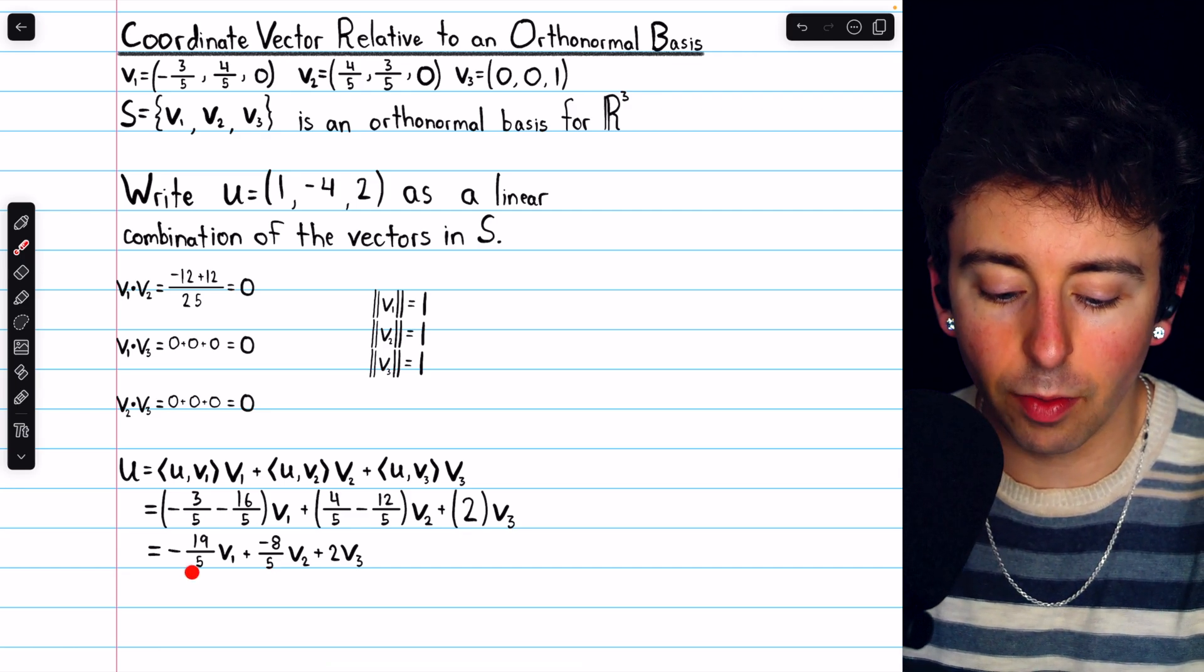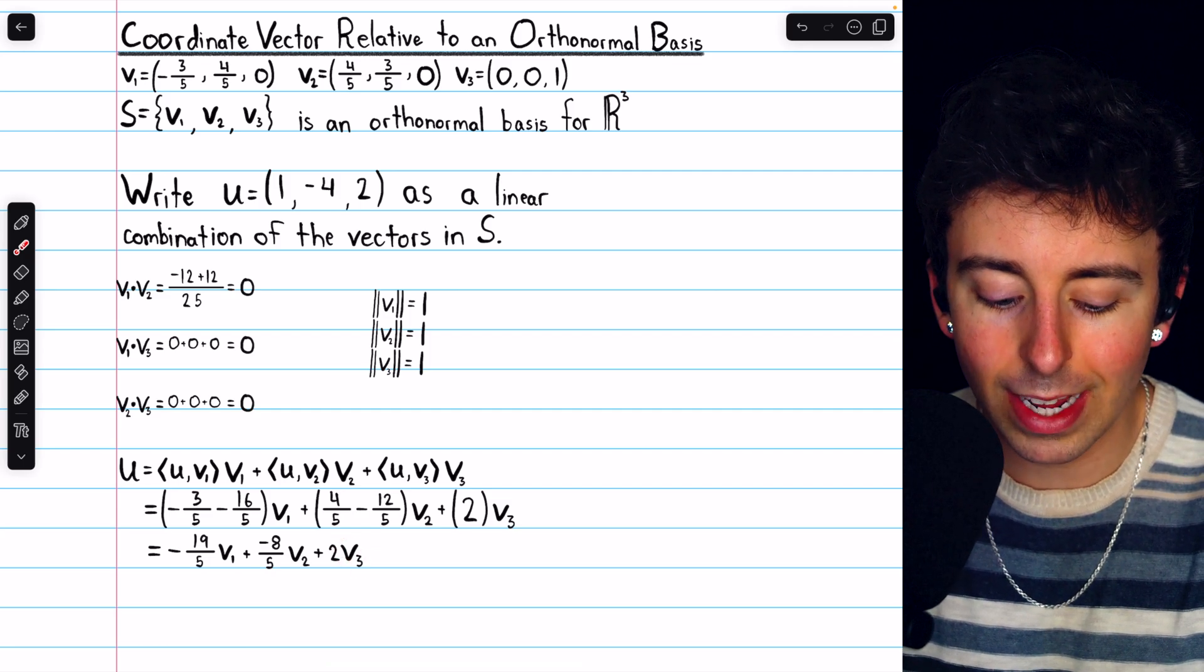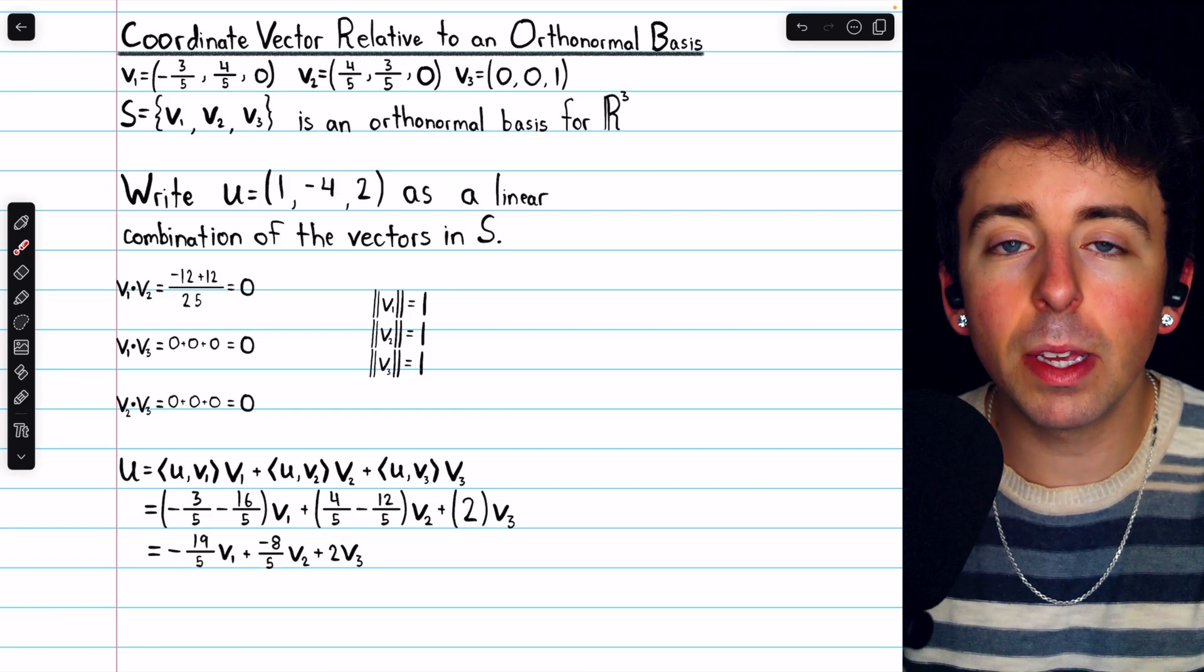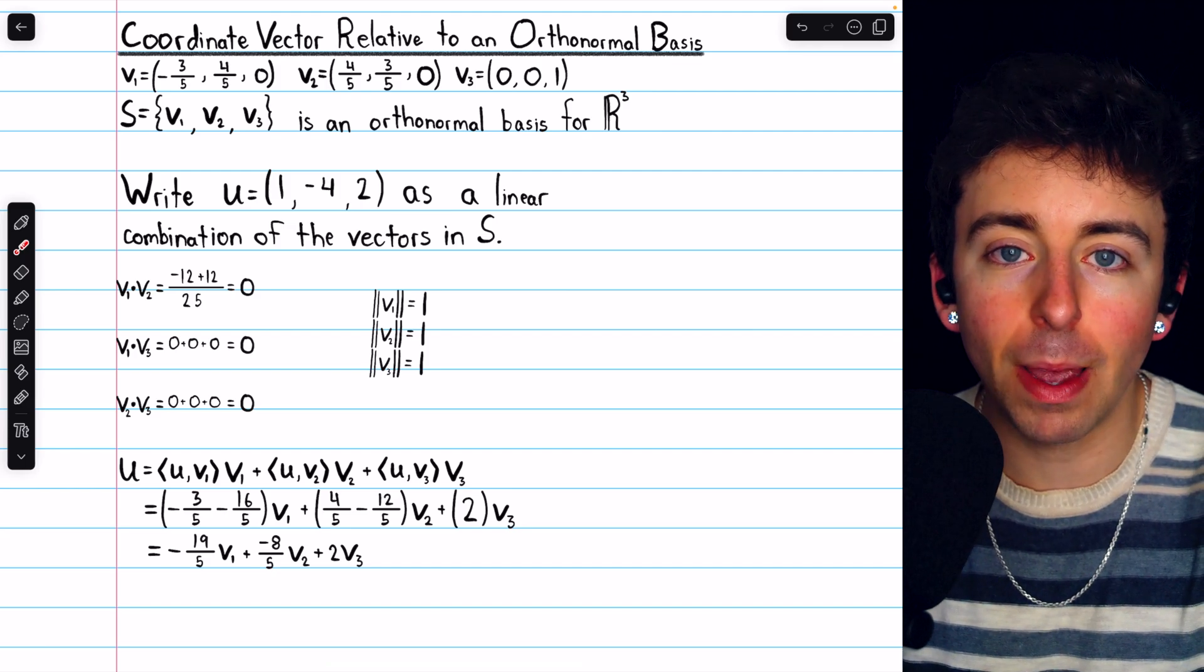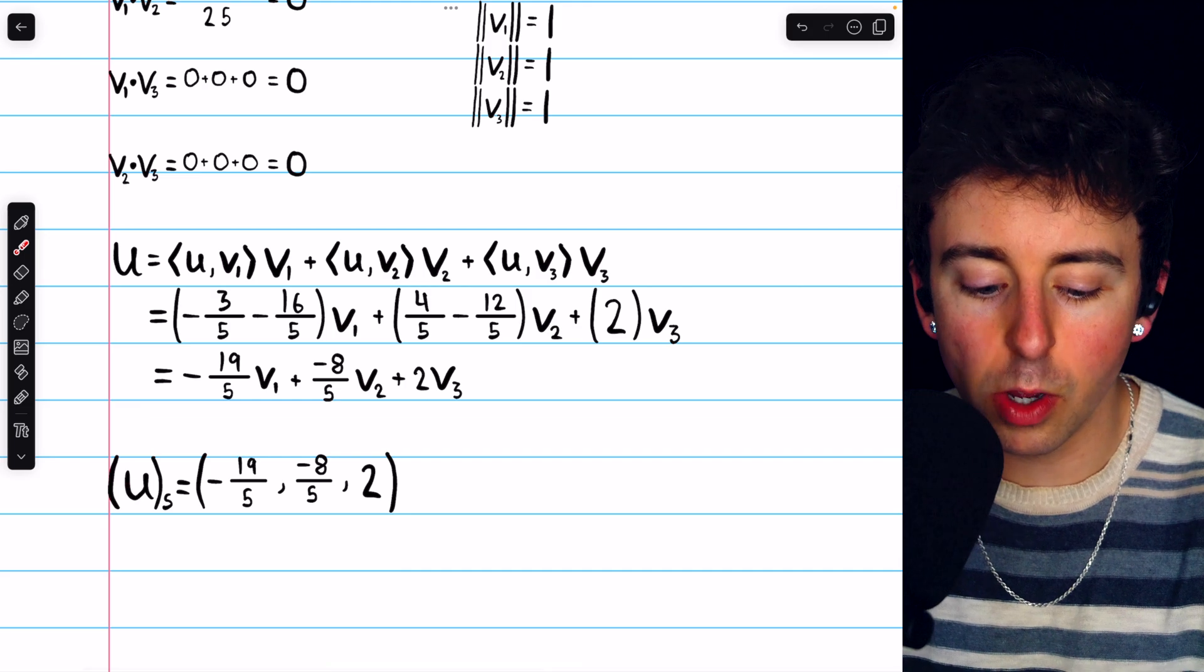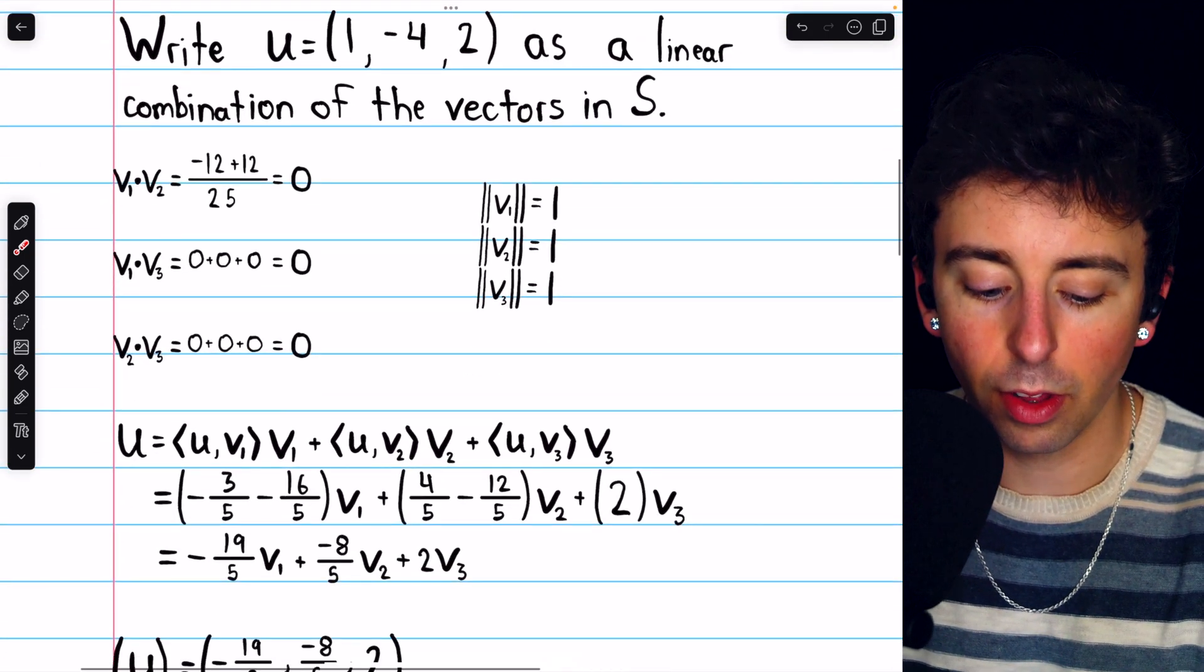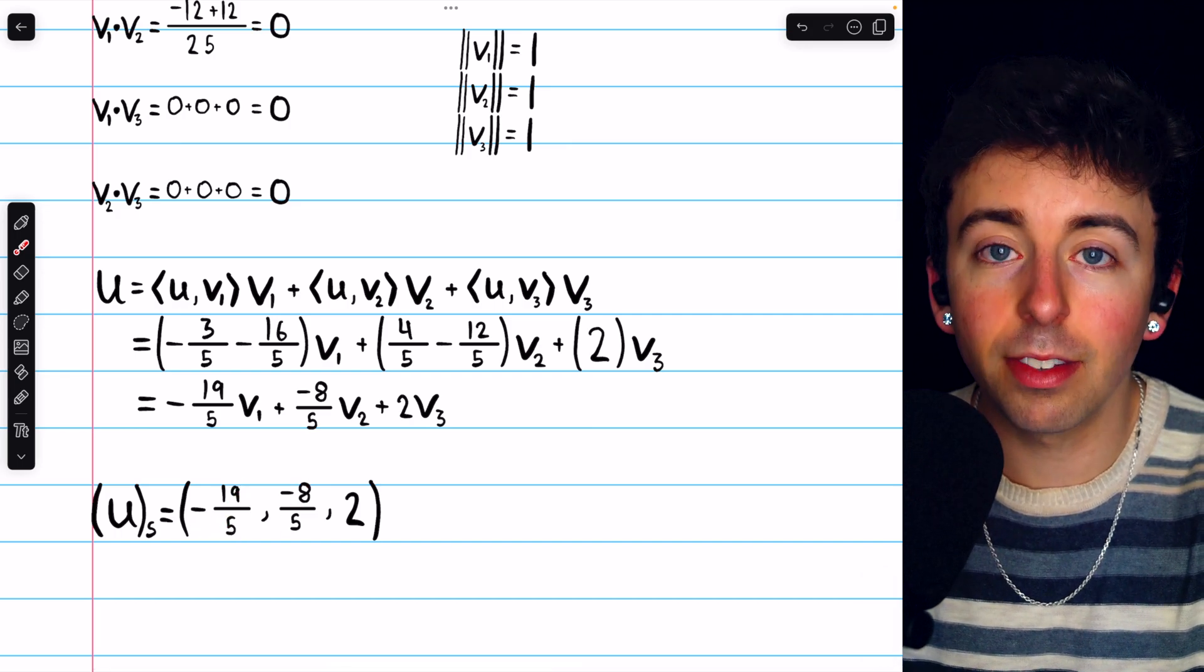u is equal to negative 19-fifths v1, plus negative 8-fifths v2, plus 2v3. These coefficients of v1, v2, and v3 can be used to write the coordinate vector of u relative to this basis. So the coordinate vector of u relative to the basis S consisting of those three orthonormal vectors is negative 19-fifths, negative 8-fifths, 2.